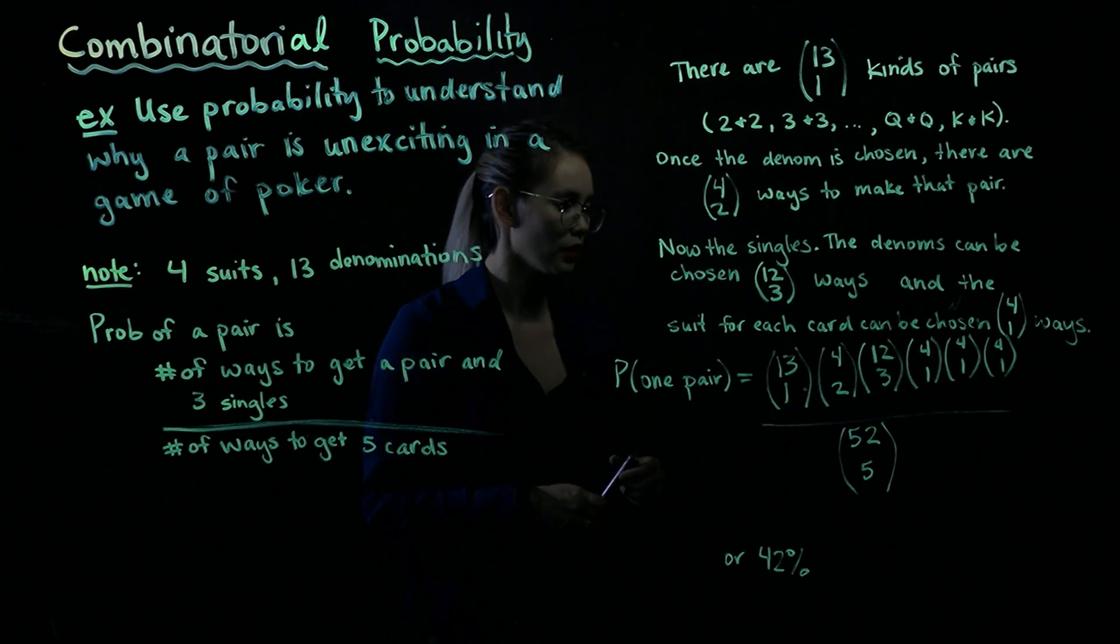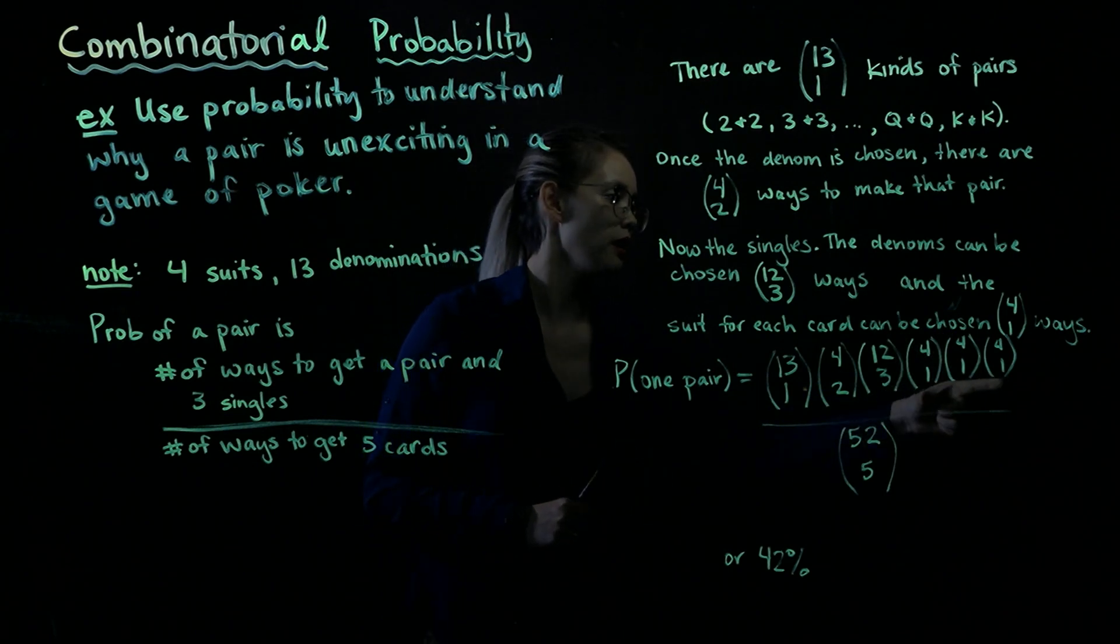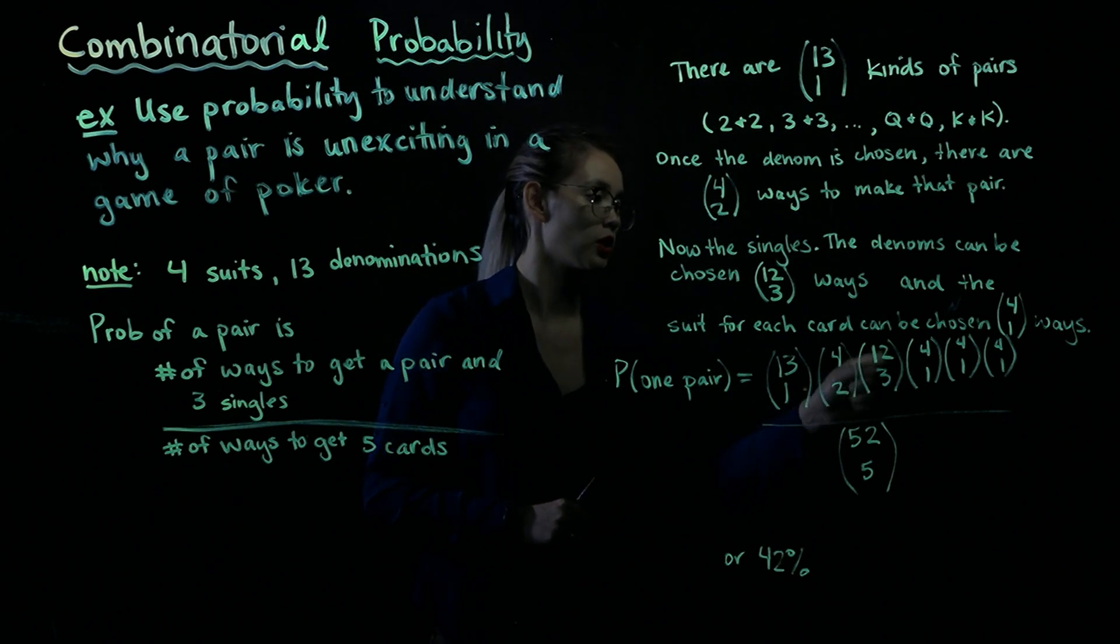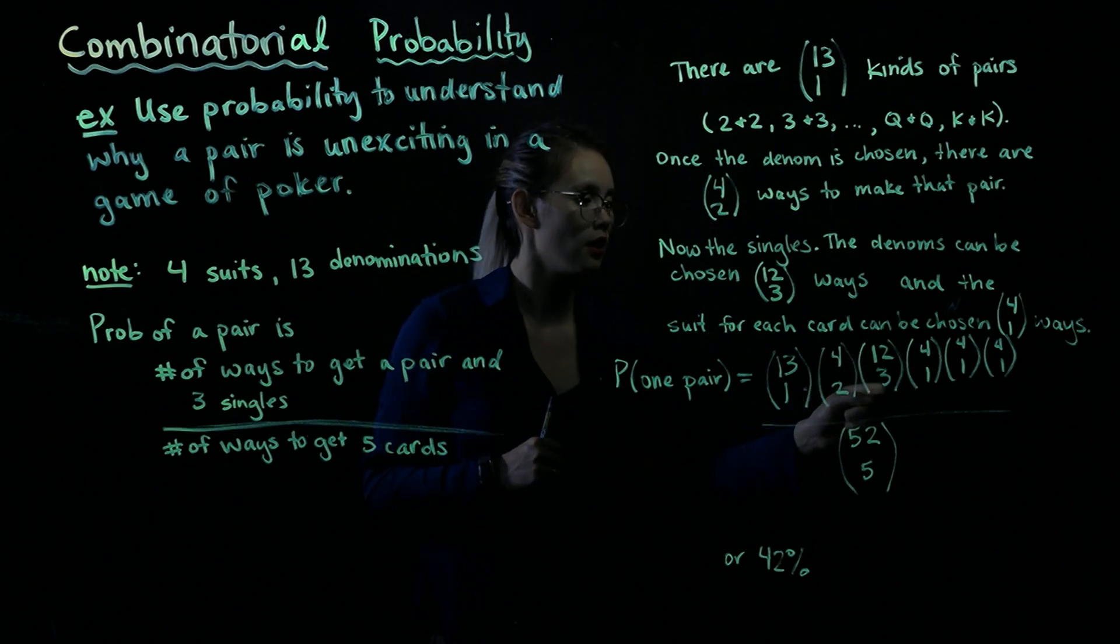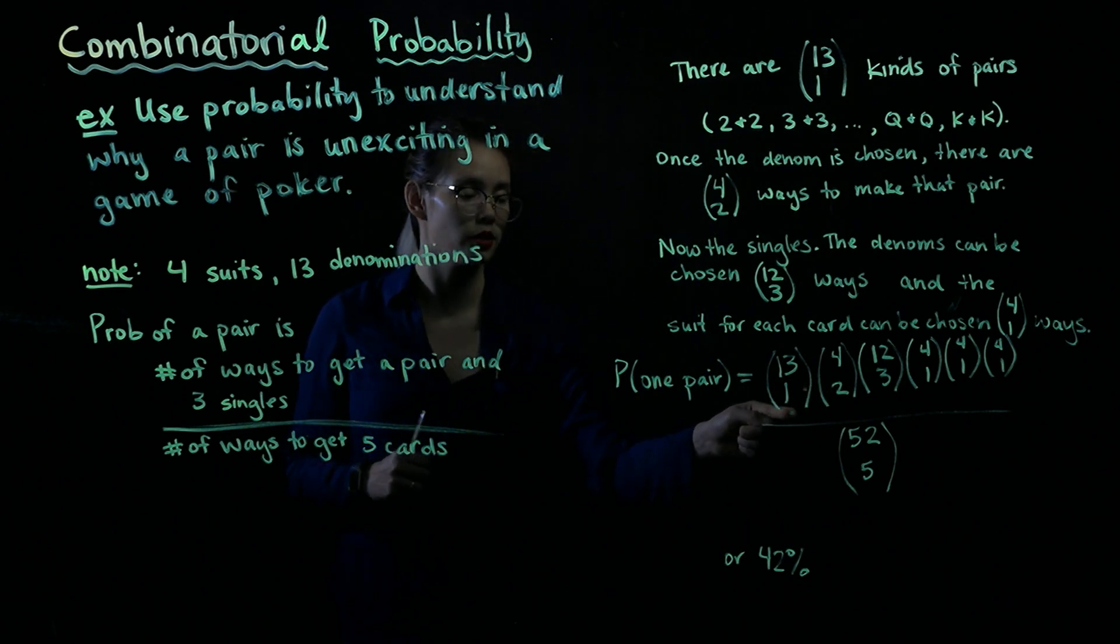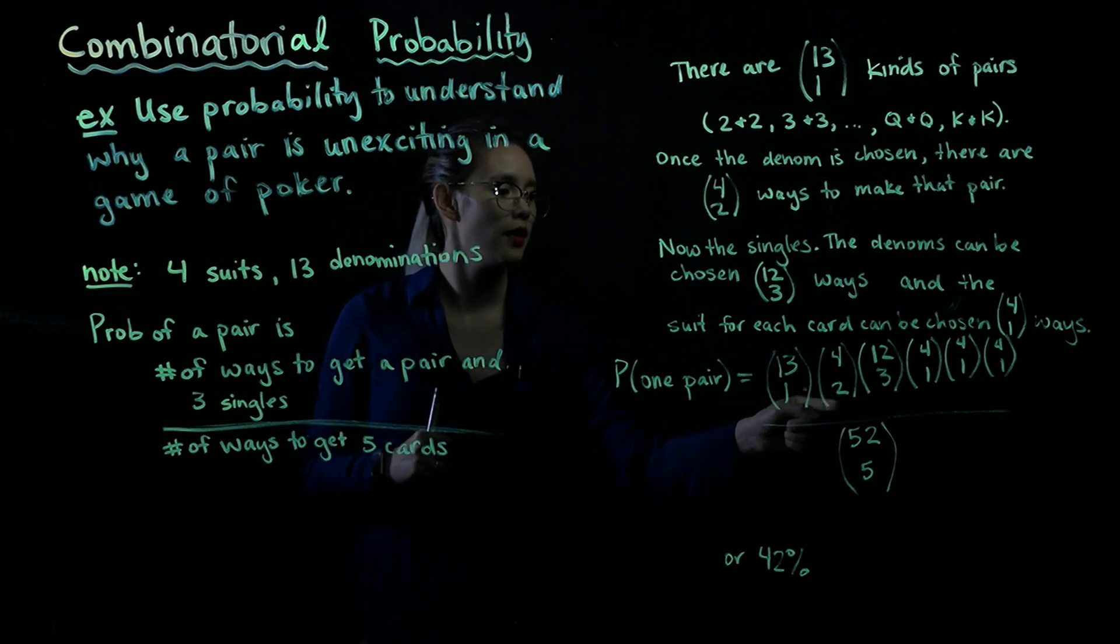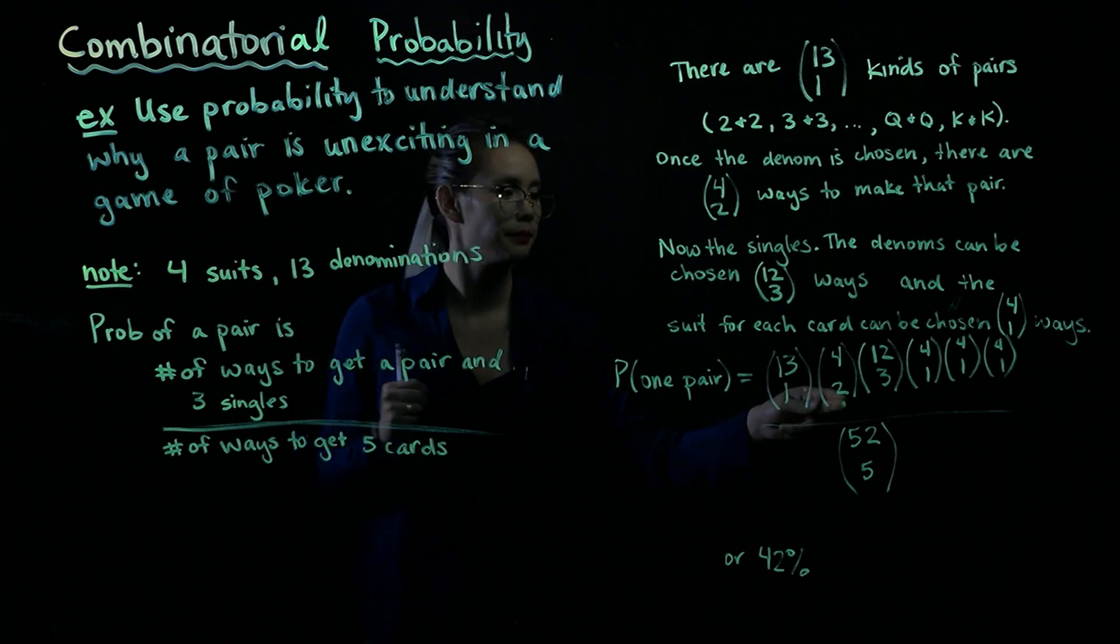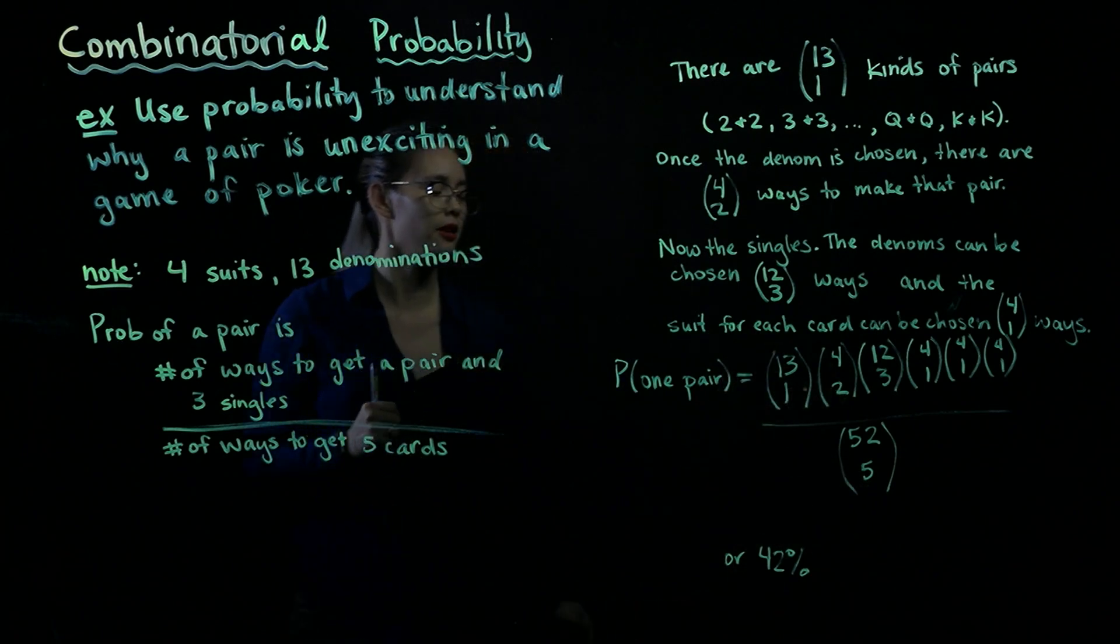So the probability of getting one pair and not anything better is 13 choose 1 times 4 choose 2 times 12 choose 3 times 4 choose 1, 4 choose 1, 4 choose 1. Again, these last three are for the singles. This is for choosing which type of card, like a two or a three, for the single. This is choosing which type of card for the pair, like a king or queen. And this is for choosing which suits are going to be making that pair, like is it going to be a spade and a heart or what. And then down in the denominator, of course, we have 52 choose 5.